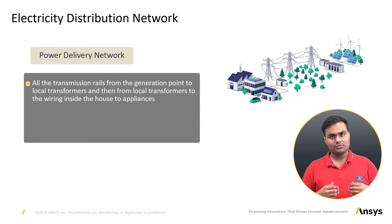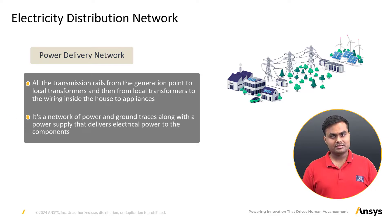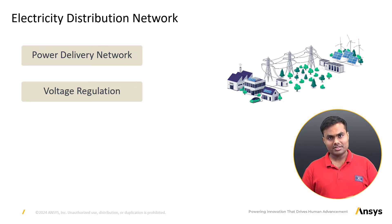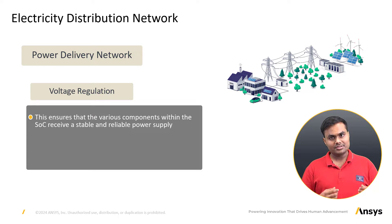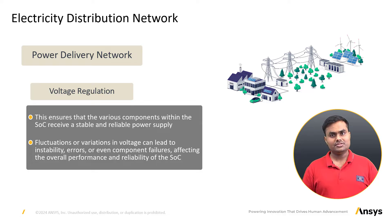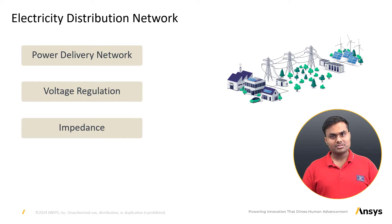This distribution system supplies power to components. It is a network of power and ground traces along the power supply that delivers electrical power to the components. Voltage regulation ensures that the voltage supply of electronic devices remains within a specified limit, providing a stable power source even when voltage fluctuations occur. In a SoC, voltage regulators ensure various components receive a stable and reliable power supply. Fluctuations or variations in voltage level can lead to instabilities, errors, or component failures, affecting overall performance and reliability.